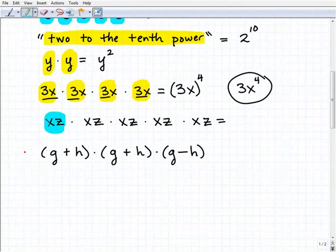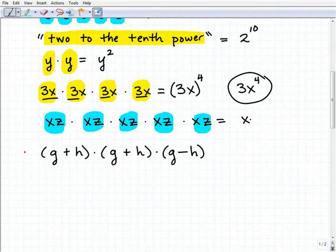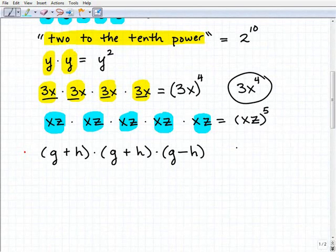Next problem. We have xz being multiplied by itself 1, 2, 3, 4, 5 times. So in this case, xz to the fifth power. xz to the fifth, that's how we would write that. We want to use those parentheses.